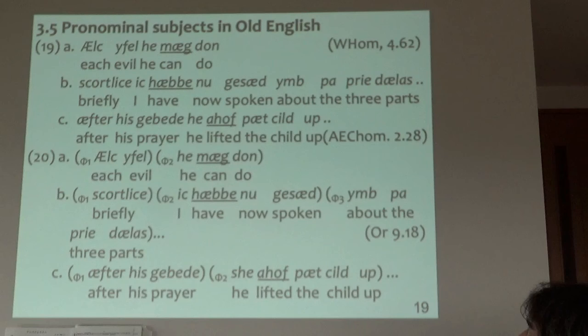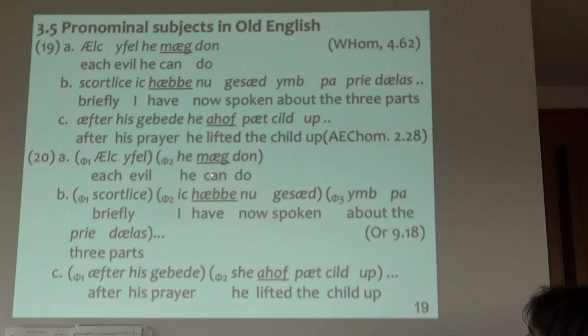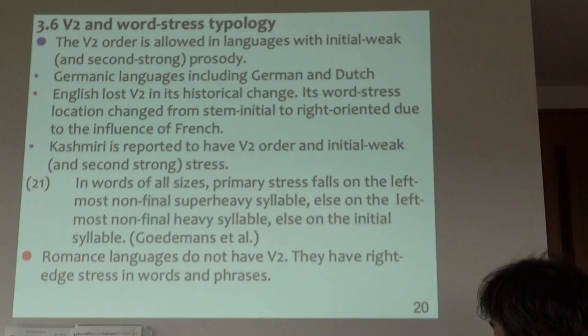An interesting point in Old English: if the subject is a pronominal, the verb comes at the third position — 'each event he can do.' Why? Because 'he' is weak, and 'make' is kind of strong. So weak-strong was okay in Old English, like German.